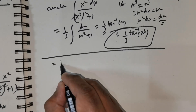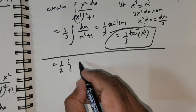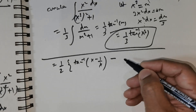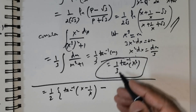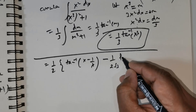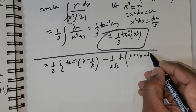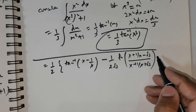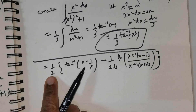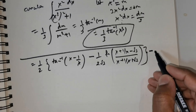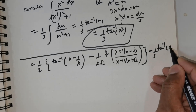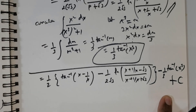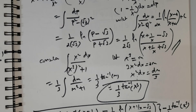Combining all results, the full integral equals one-half times arctan of x minus 1 over x, minus one-half times 1 over 2 root 3 times ln of x plus 1 over x minus root 3 divided by x plus 1 over x plus root 3, minus 1 over 3 arctan of x cubed, plus an arbitrary constant C. I hope everybody understood this question. Enjoy your night.